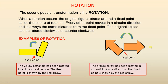The second popular transformation is the rotation. When a rotation occurs, the original figure rotates around a fixed point called the center of rotation. Every other point moves in a circular direction and is always the same distance from the fixed point. The original object can be rotated clockwise or counterclockwise.